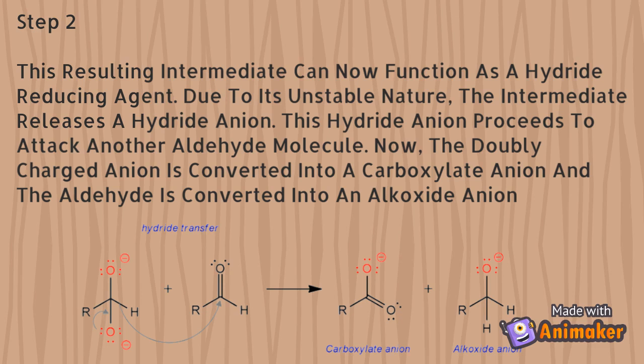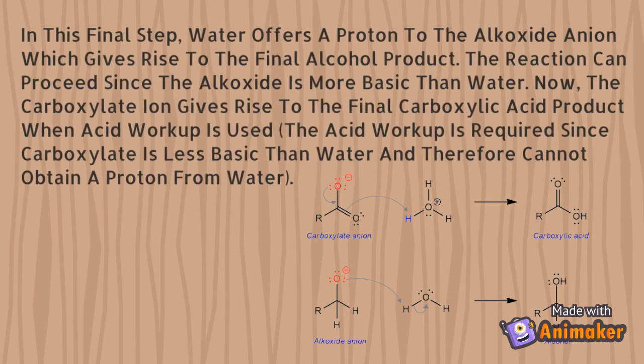Now, the doubly charged anion is converted into a carboxylate anion, and the aldehyde is converted into an alkoxide anion. Step number 3: in this final step, water offers a proton to the alkoxide anion, which gives rise to the final alcohol product.